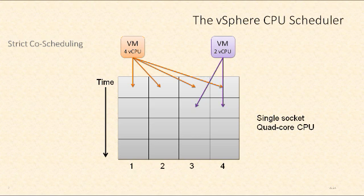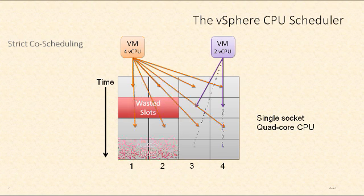When that time slot arrives, my virtual machine with two virtual CPUs consumes two of those processor cores, which means two cores are taken. The virtual machine on the left needs four in order to operate, so if it still has instructions to execute, it's going to have to wait until the next time slot. The pattern repeats, and we end up with cores that are actually being wasted for certain time slots. The other side effect is the two virtual machines are taking turns — not able to simultaneously execute — and this results in higher CPU ready values.